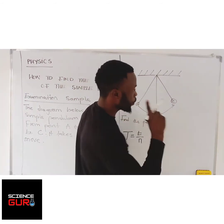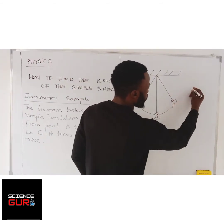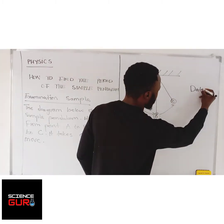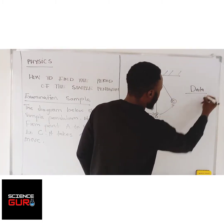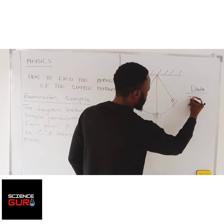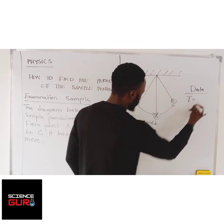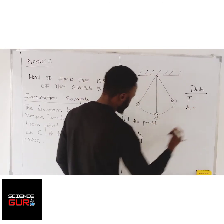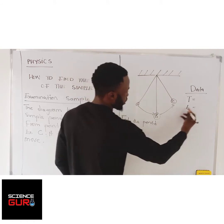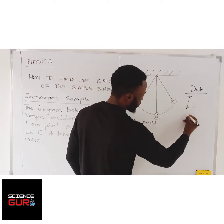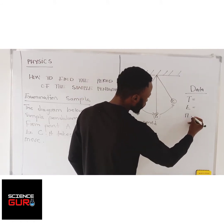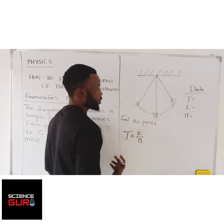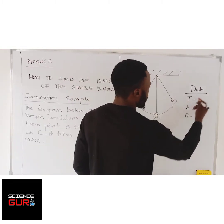Before you do anything in physics, you have to collect what we call your data. You collect your data: T is equal to that, small letter t is equal to that, and N — oscillations — is equal to that. So you are finding the period, you put a question mark. The time they gave is 0.25 seconds.